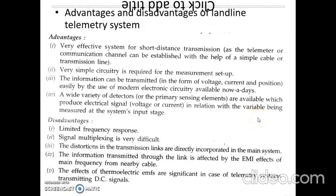The landline telemetry system is the basic and most commonly used type of telemetry system. Its advantages are: it is very effective for short distance transmission as there exists a direct physical link between transmitter and receiver; a very simple circuit is required for the measurement setup; information can be transmitted easily using modern electronic circuitry; and a wide variety of detectors are available which produce electrical signals in relation with the variable being measured at the system's input stage.